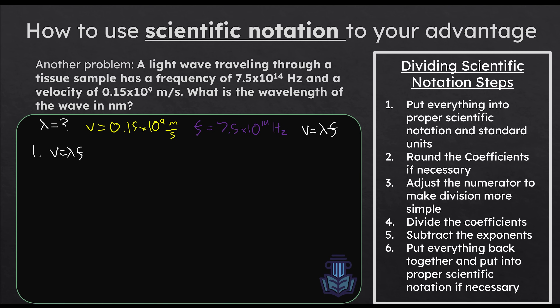Since we're moving the decimal to the right to convert 0.15 × 10^9, the exponent is going to become more negative. So this equals 1.5 × 10^8 meters per second. Now that we have everything in proper units and scientific notation, we're not really going to do any rounding here — we're already at 7.5 and 1.5, and rounding in either direction might create significant rounding errors. You could round the frequency up to 8 if you really wanted to, but I'm going to leave it.